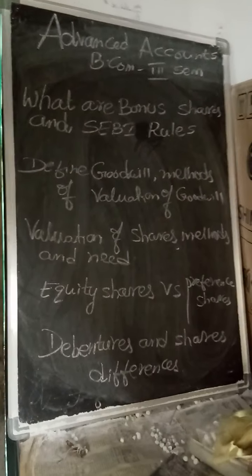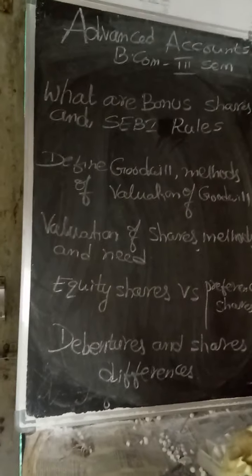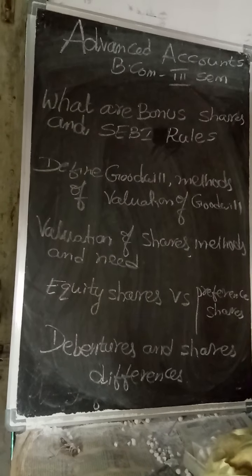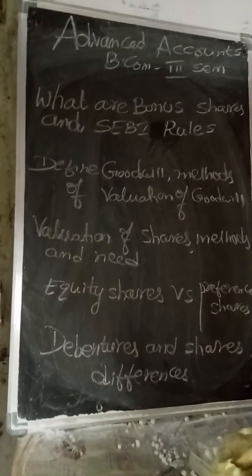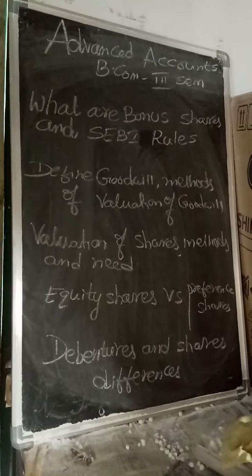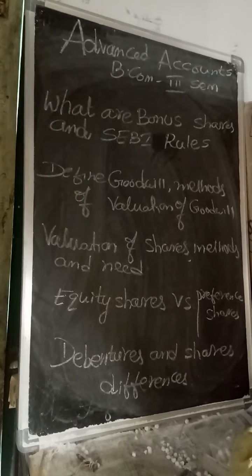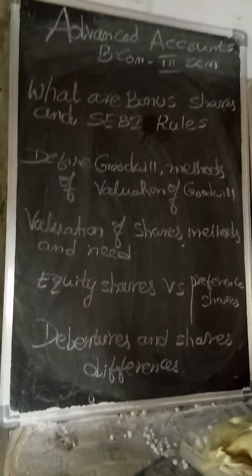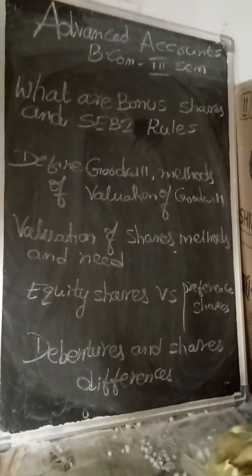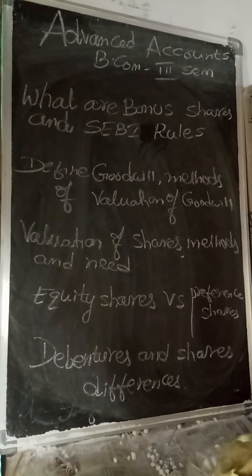Debentures are loan instruments for the company. When the company wants long-term loans, it will issue debentures. When the company wants capital, they will issue shares. Those who buy debentures are called debenture holders; those who buy shares are called shareholders. Debenture holders will get interest, while shareholders will get dividends. Even if the company does not have sufficient profits, interest must be paid. But in the case of shareholders, if the company is not in profits, there is no need to pay dividends.